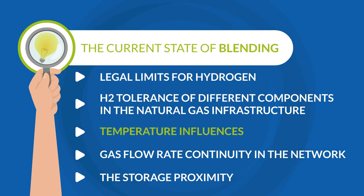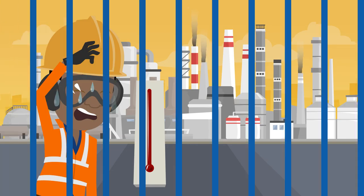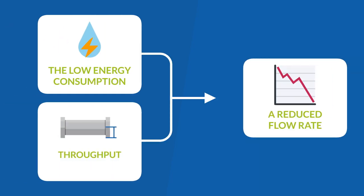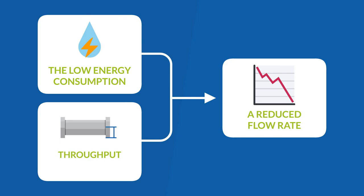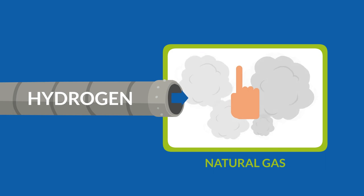Seasonal dependencies affect the hydrogen blending process, too. This phenomenon happens in the high-temperature months of summer. In the summer, the low energy consumption and throughput often come with a reduced flow rate. If this low flow rate is to feed hydrogen only, the mixture with existing natural gas won't be good. Hydrogen bubbles will form.